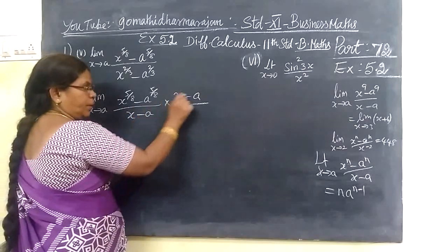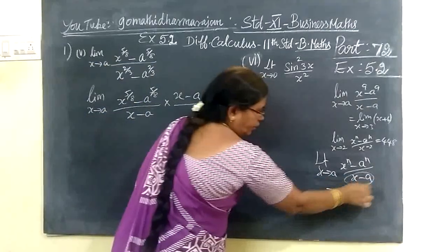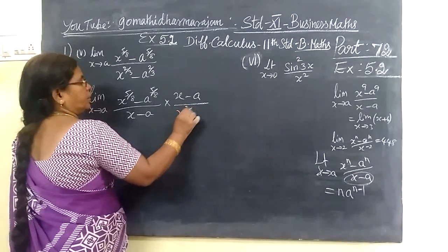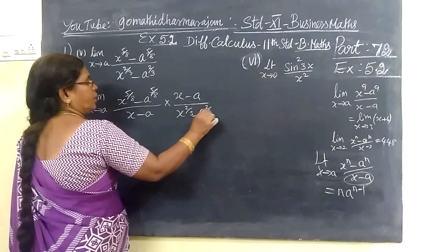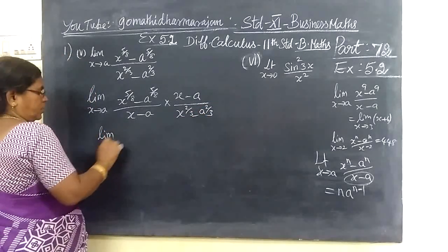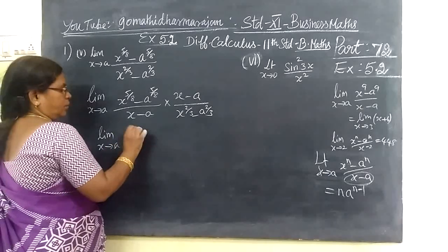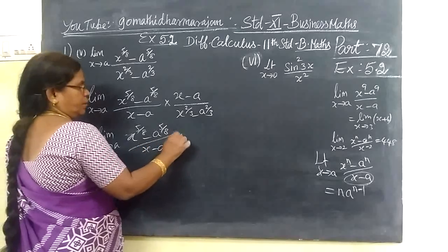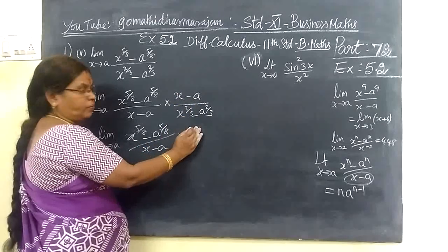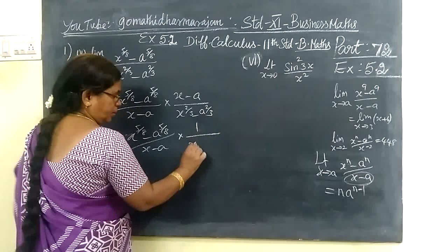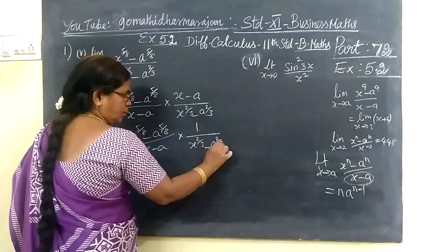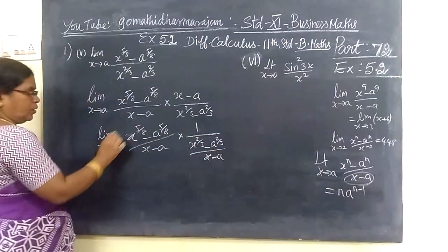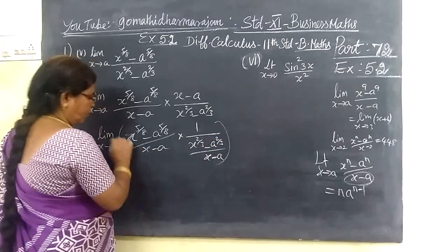So in the formula, we use the formula. We are multiplying and dividing by x minus a, since x minus a alone is not allowed in the term. Now we can write x power 2 by 3 minus a power 2 by 3. So this becomes x power 5 by 8 minus a power 5 by 8, divided by x minus a.